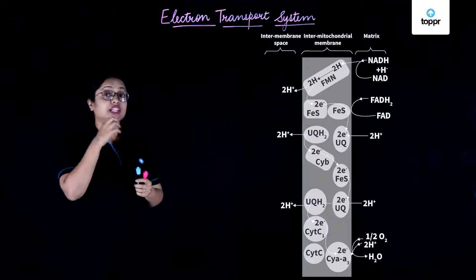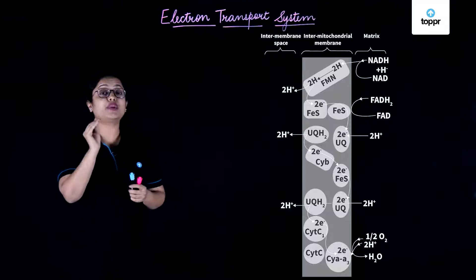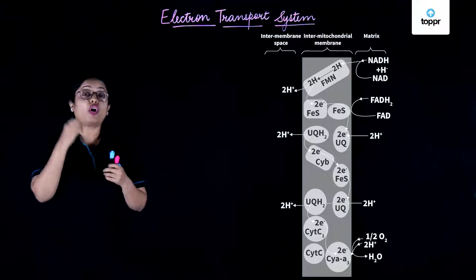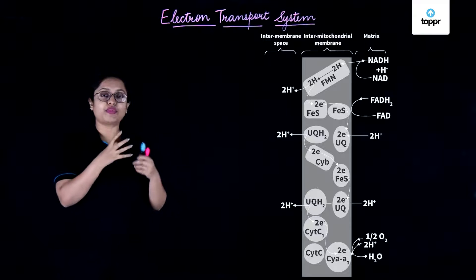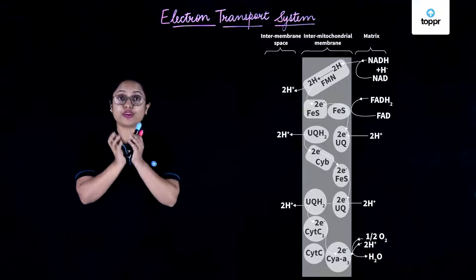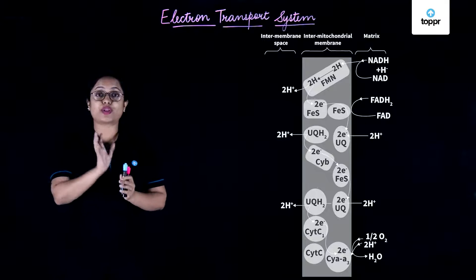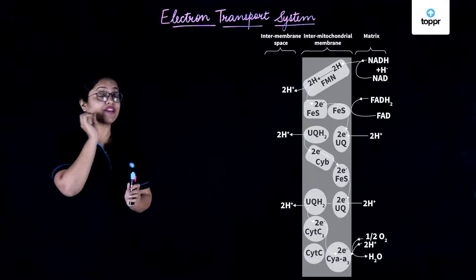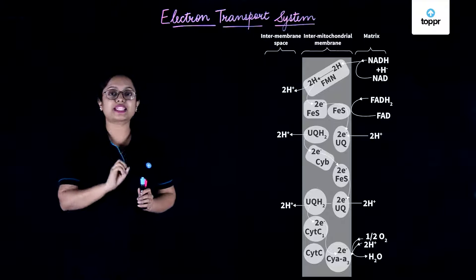Next, these electrons are given up to ubiquinone. Ubiquinone also accepts electrons from FADH₂, which was also formed in the Krebs cycle. Now the ubiquinone is reduced, and this reduced form of ubiquinone is known as ubiquinol. This FADH₂ complex is known as Complex II.